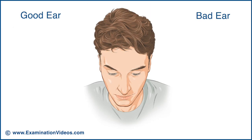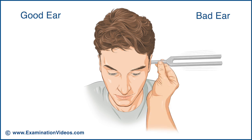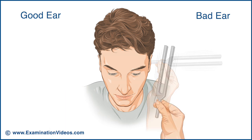To explain the Rinne test, an example of a patient with a hearing loss in the left ear will be used. Strike a 512 Hz tuning fork and place its handle on the left mastoid process. Ask the patient to report when they can no longer hear the sound. At that moment, place the still vibrating end of the tuning fork near the patient's left ear and ask them if they can hear the sound again.